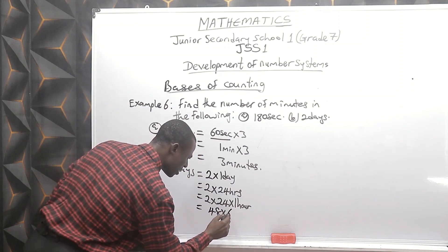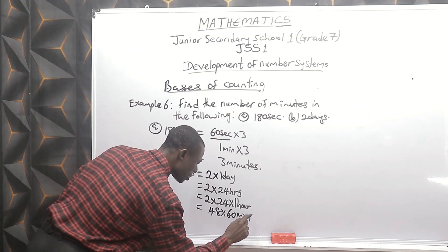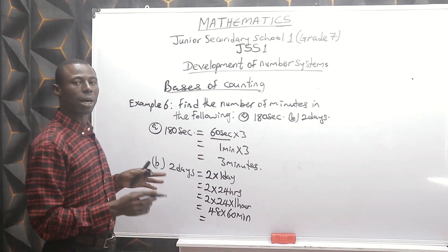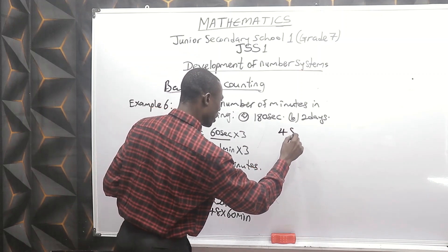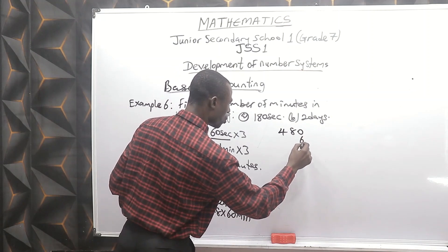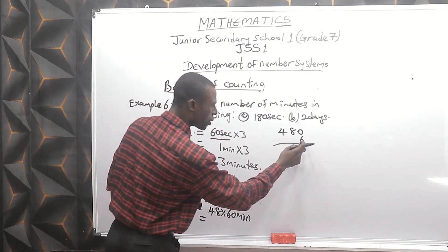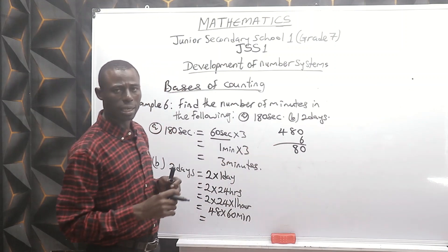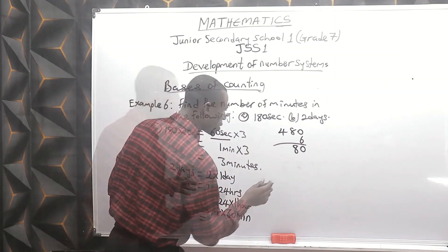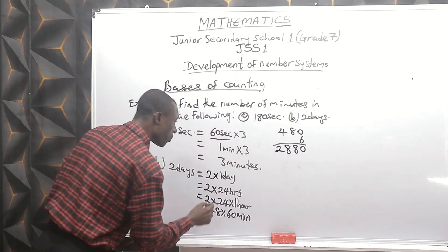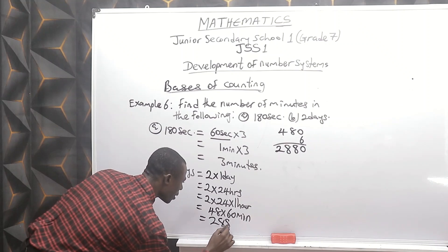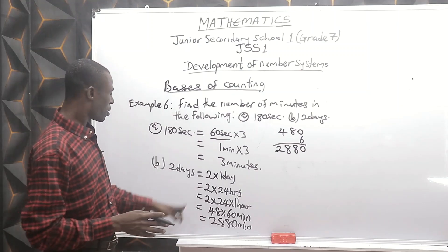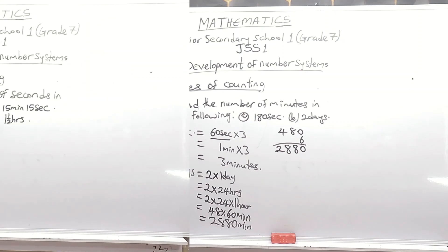Now 48 hours — one hour is 60 minutes. So 48 times 60 minutes is what we need to calculate. Let's work it out: 48 times 60 — six times zero is zero, six times eight is 48, write eight carry four, six times four is 24 plus 4 is 28. So we have 2880 minutes. That is the answer.